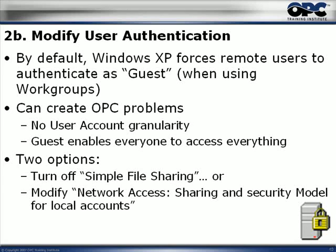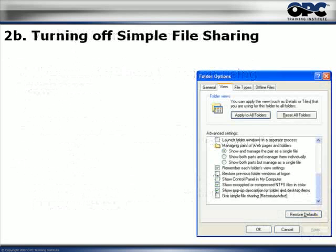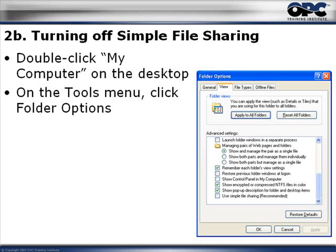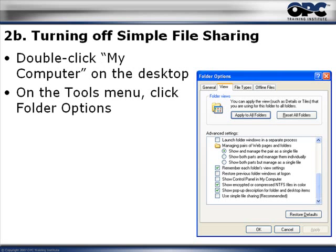There are a couple of options to turn that off. The first is to turn off Simple File Sharing — that's another name for this feature. Or you can modify the Network Access Sharing and Security Model for Local Accounts. We'll show you how to do both. To turn off Simple File Sharing, double-click on the My Computer icon on your desktop, then click on the Tools menu and specifically click on Folder Options.